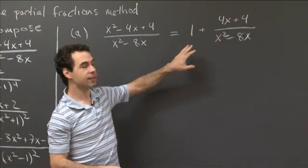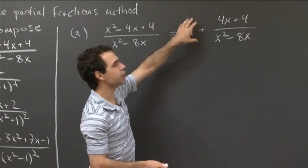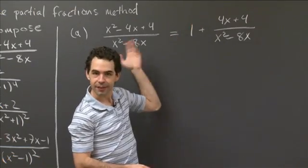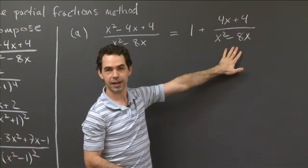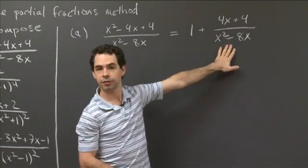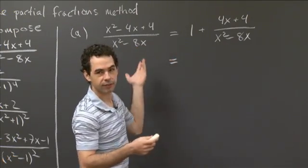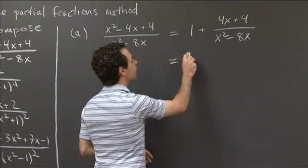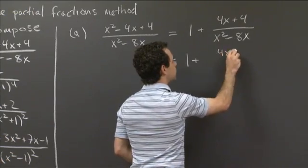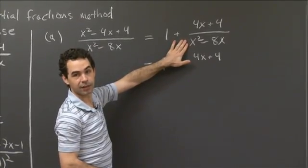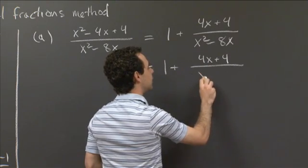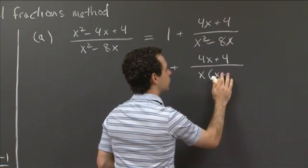After we do that process, we get a polynomial out front, which is good because polynomials are easy to integrate. So we focus on partial fraction decomposing the second part. To do that, once you've got a smaller degree on top than downstairs, you factor the denominator. In this case, 4x + 4 is on top, and we can factor out an x from both terms in the denominator: x times (x minus 8).